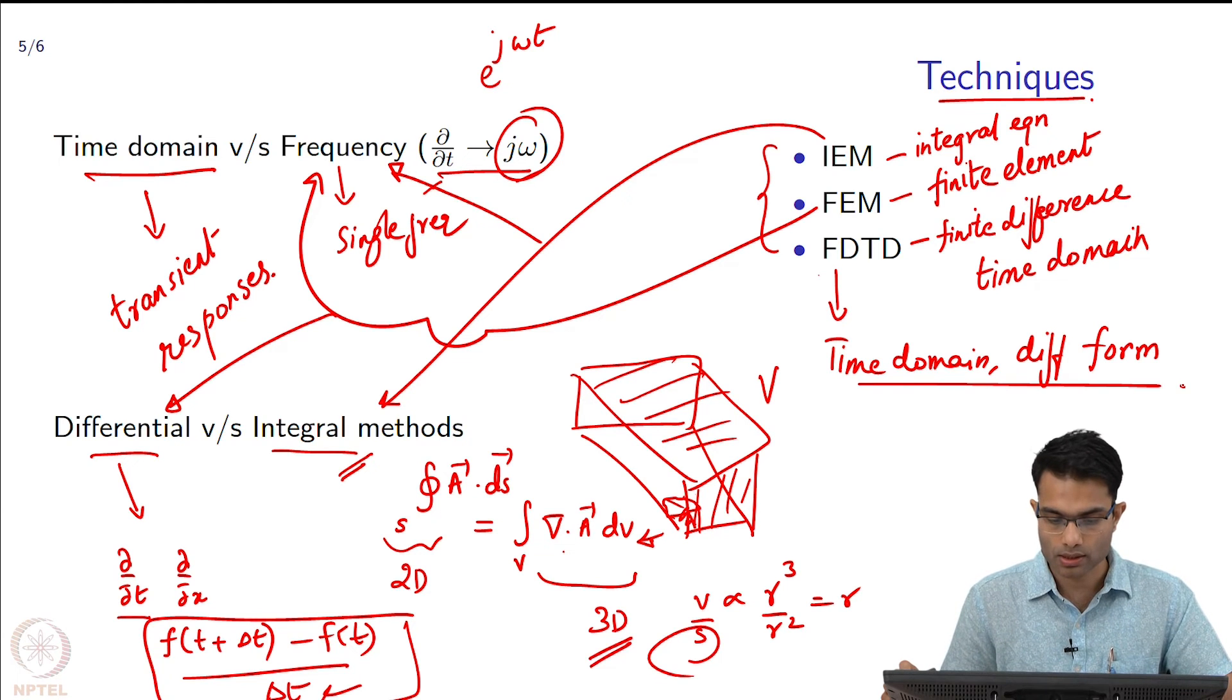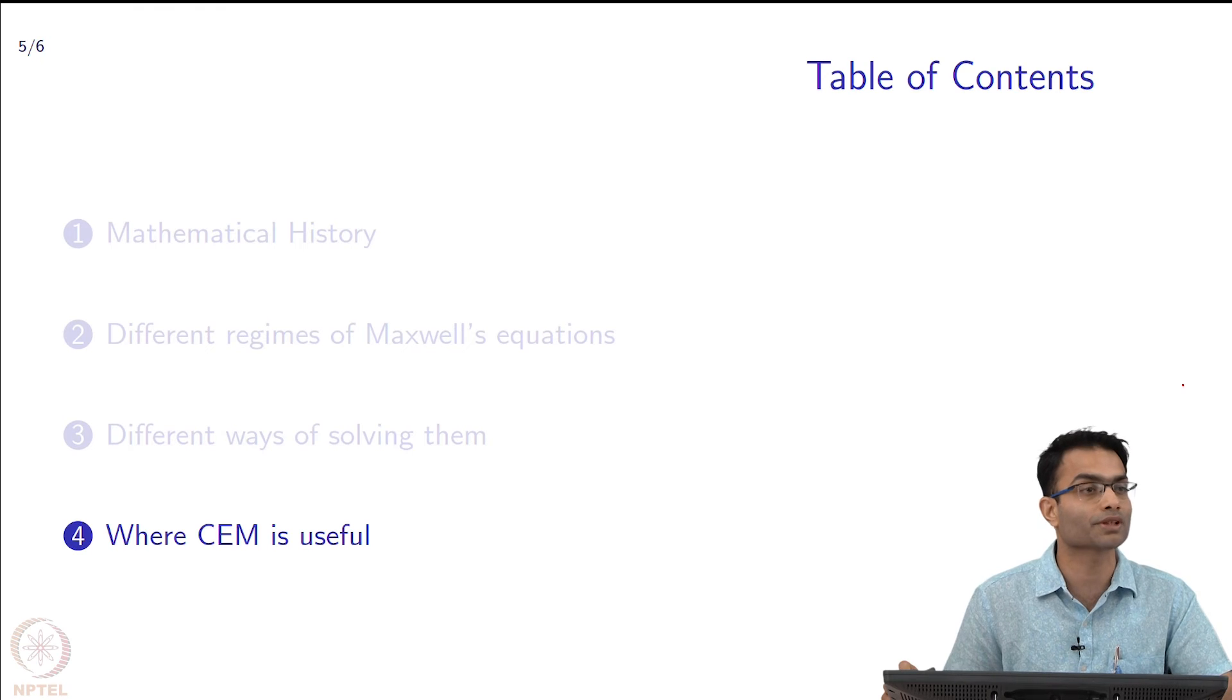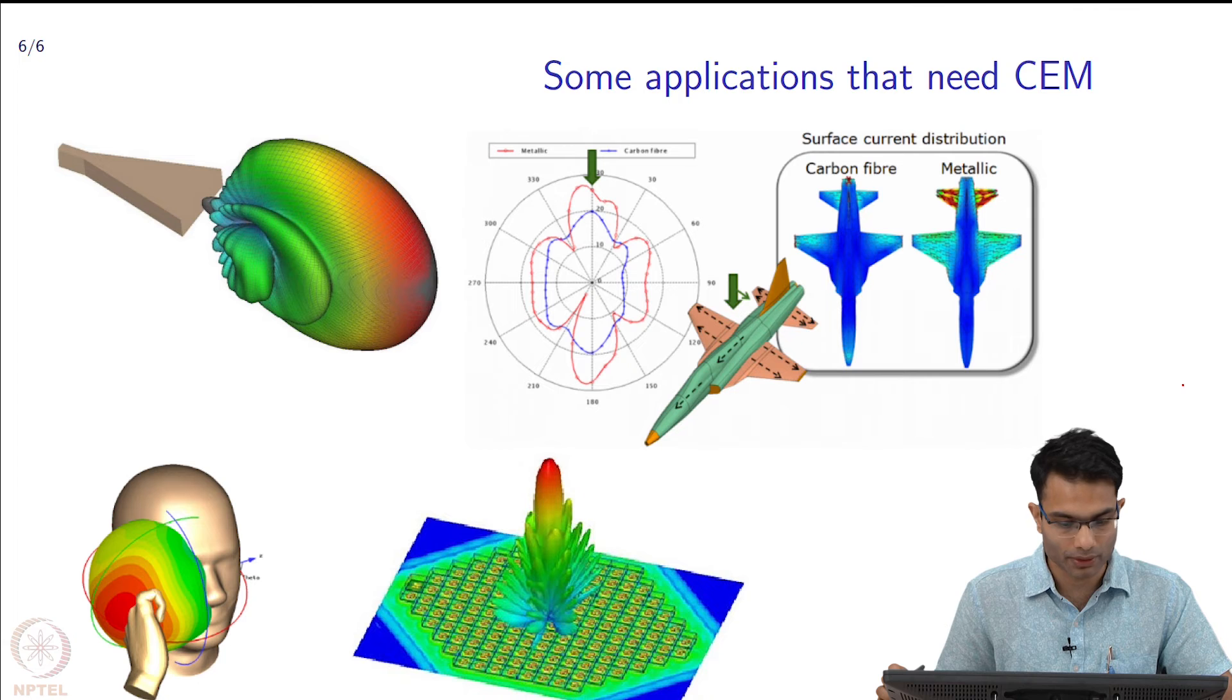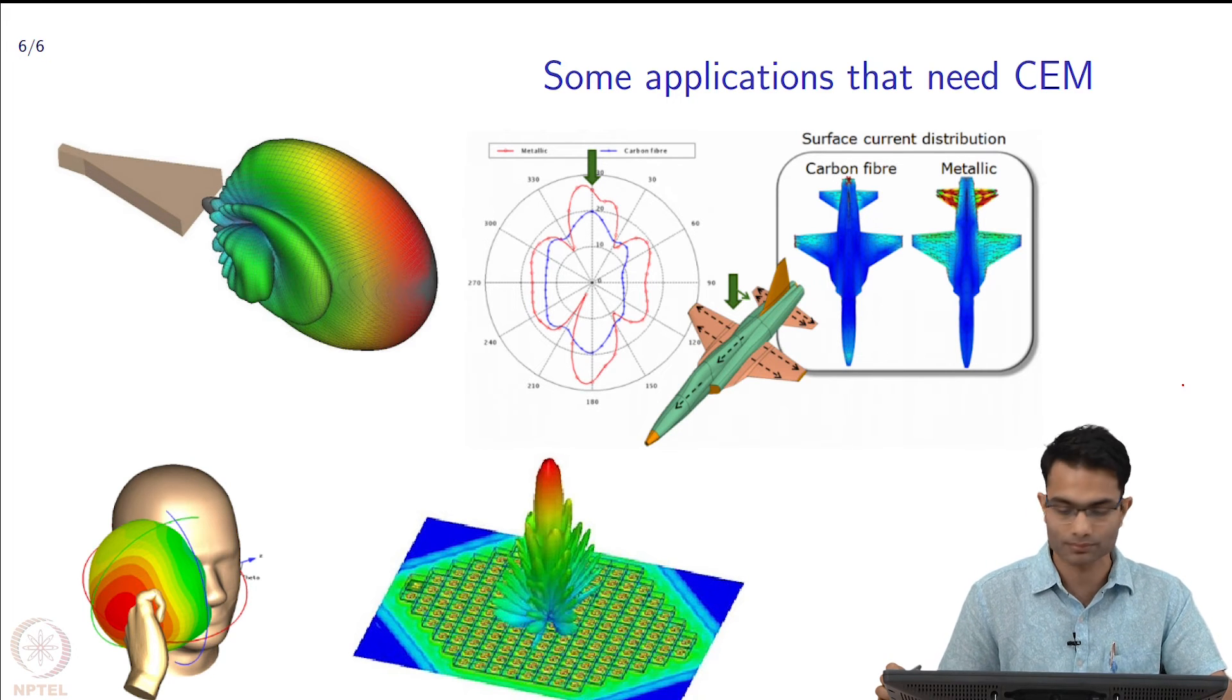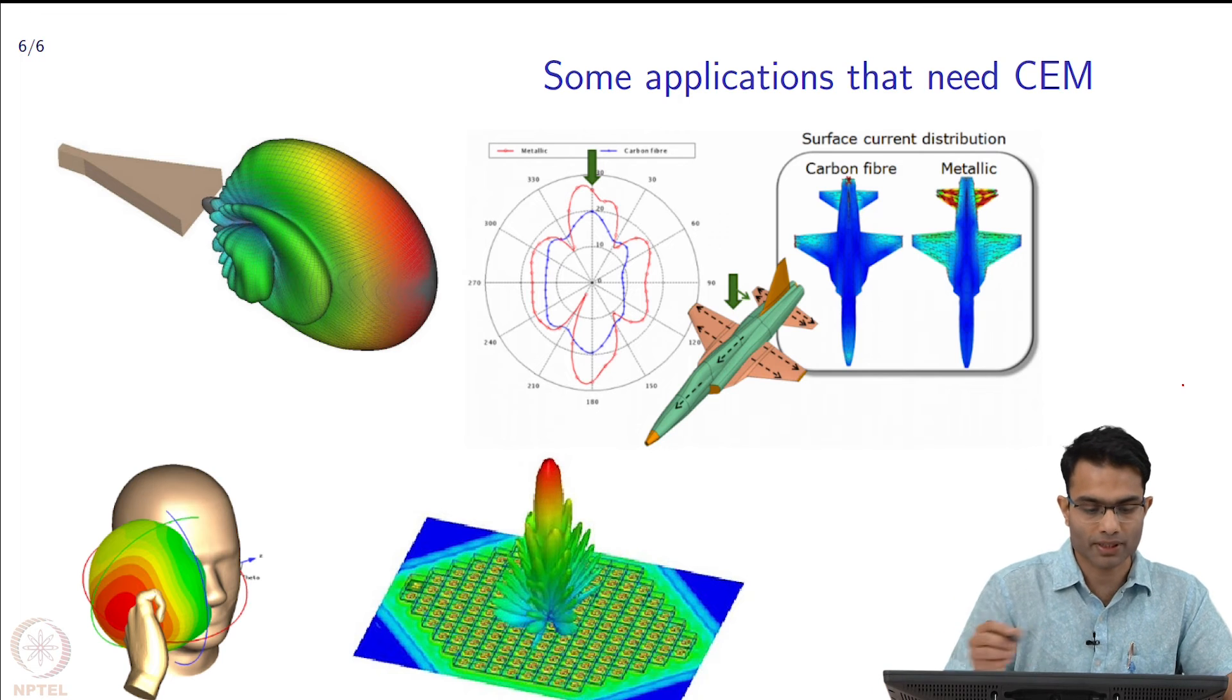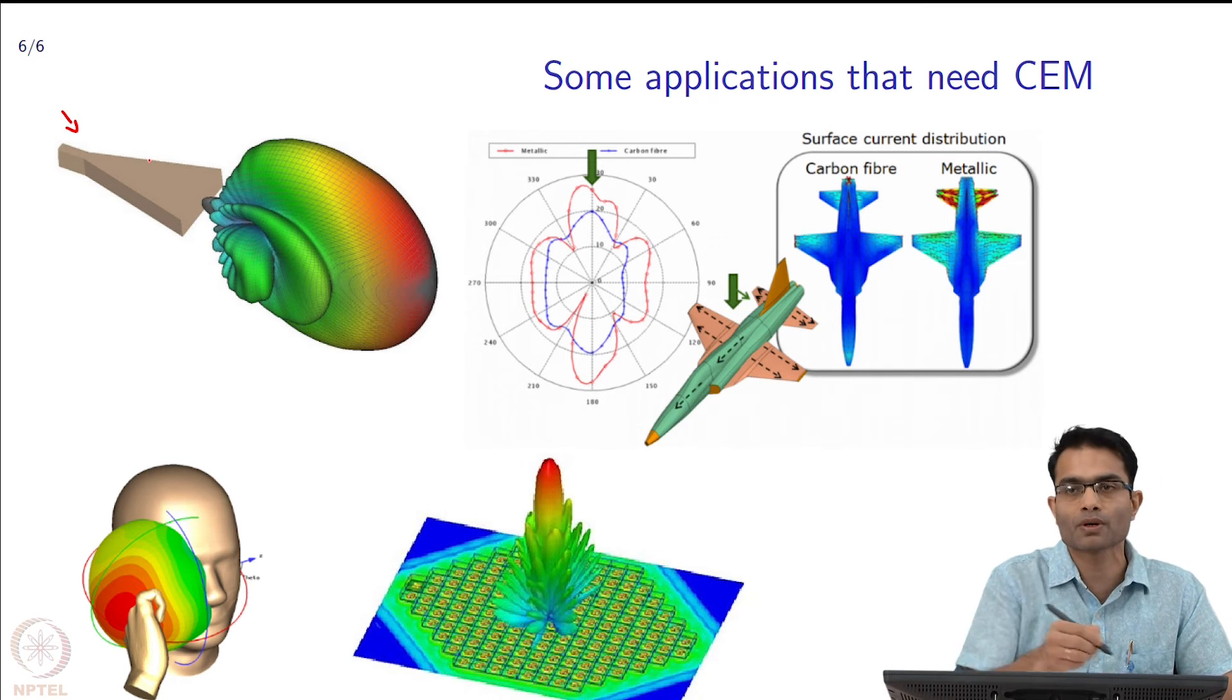That brings us to where is computational electromagnetics actually used, where is it useful. I have just put a few simple pictures here to show you simulation results. The credits page has gone - these are taken from commercial software like CST Microwave and HFSS. For example, the first thing here, can anyone tell me what is this structure? It is a horn antenna.